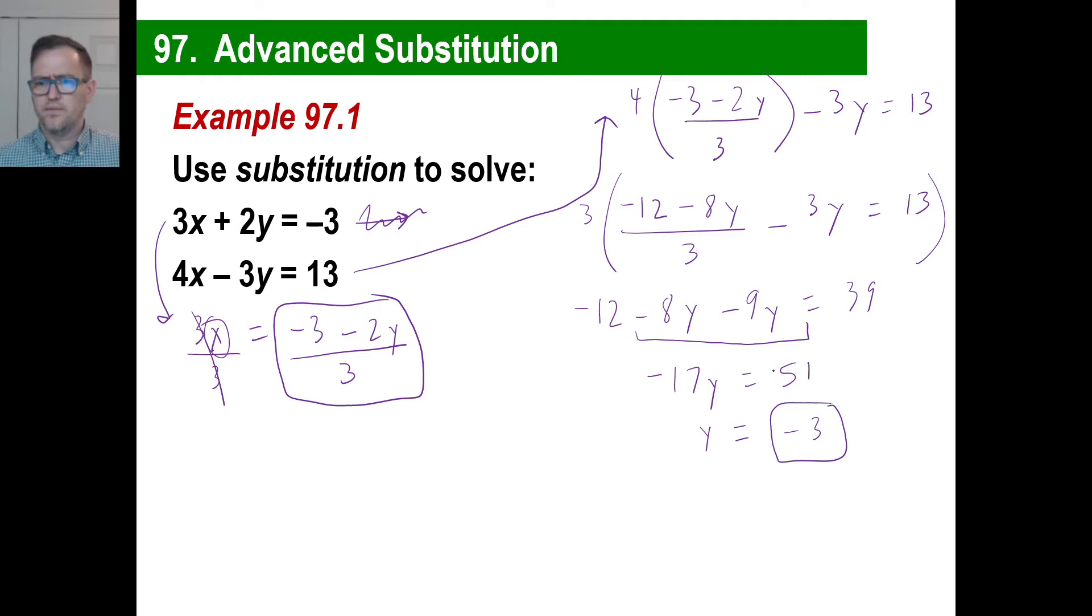And almost always, they will give you good integer answers if they're torturing you enough to make these long problems or whatever. Well, since Y is negative 3, let's just, we'll go back to any one of these equations will work. So Y is negative 3, so we'll go 3 times X plus 2 times Y. Let's just go ahead and make it a negative 6. Equals negative 3. So that goes over there. That becomes 3X is 3, and we have X is equal to 1, and everybody's happy. We'll try one more of these.